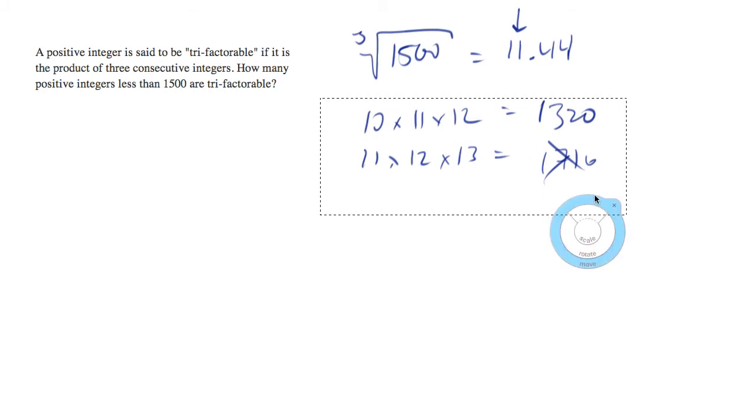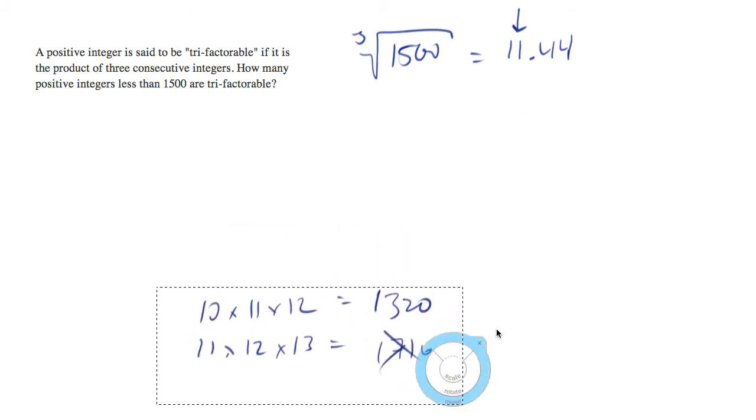Well now we've got ourselves a pattern. I'm going to put this down here as if it's at the bottom of a list. We can start out at the top and I know if I do 1 times 2 times 3 I'm going to get 6, so that one's in the list. And the question is really how many are between the 6 and the 1320.